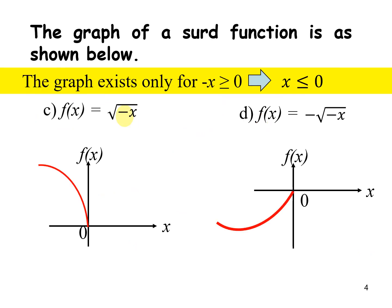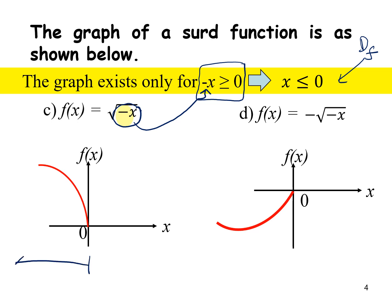For f(x) = √(-x), the graph exists only when -x ≥ 0. Solving this gives x ≤ 0, which is the domain of the function. That's why the graph starts at 0 and extends to the left. For the range, we start from y = 0 upward.